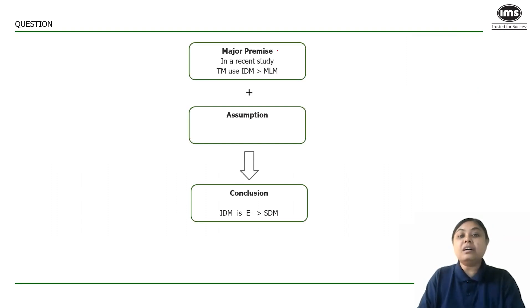I have a term called major premise. A major premise is the information that the author is using or the reason to arrive at his or her conclusion. This information is taking top managers into consideration and that they are using intuition more often. Then my author based on this is automatically concluding that intuitive DM is more effective than SDM.